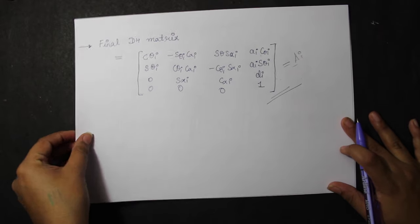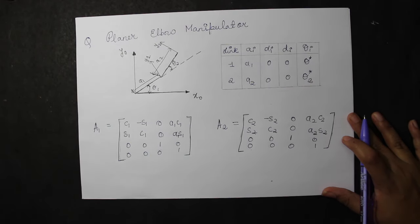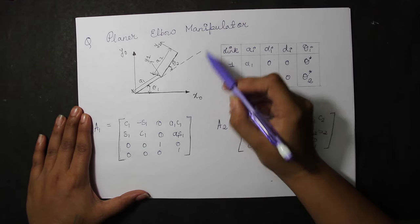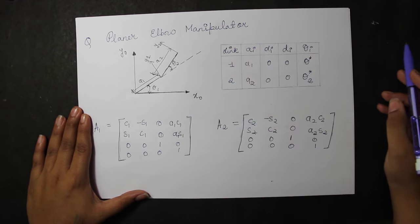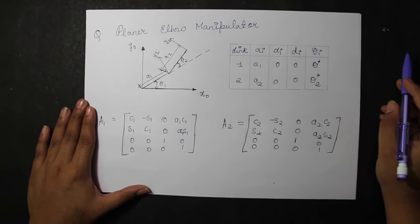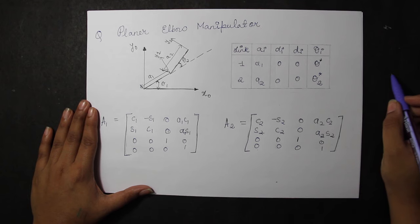Now, let us look at the parallel elbow manipulator. We have already derived the forward kinematics of this with the geometrical approach. Now, let us look at a more basic and more fundamental approach of DH convention. So, let us start.